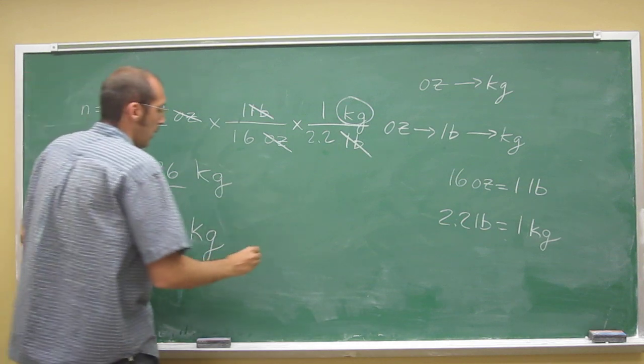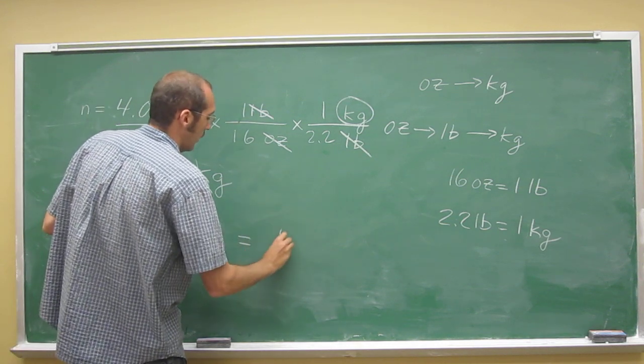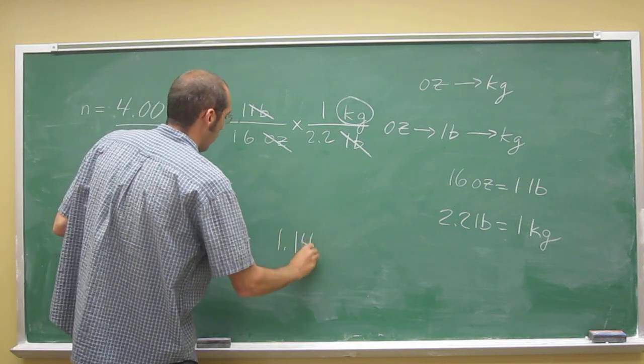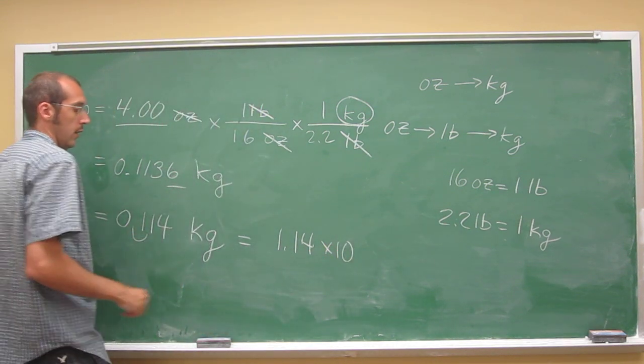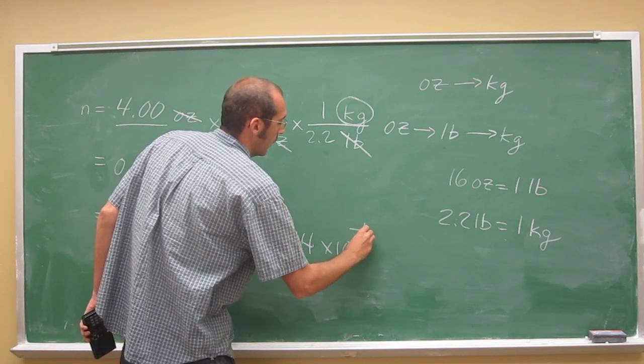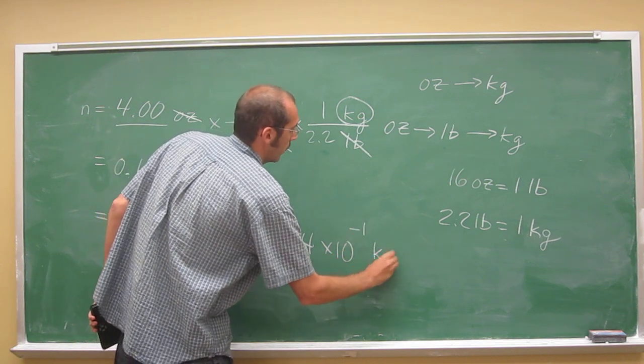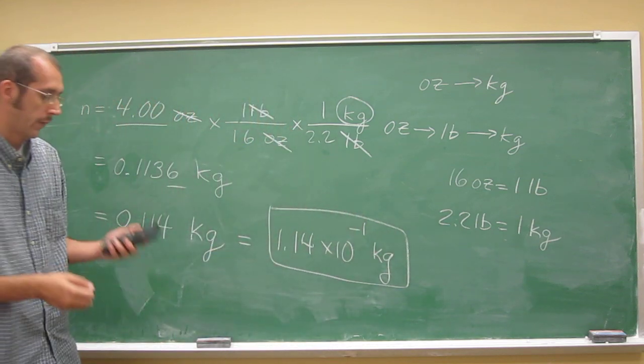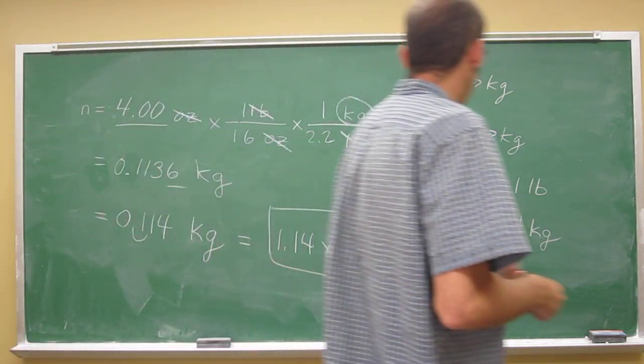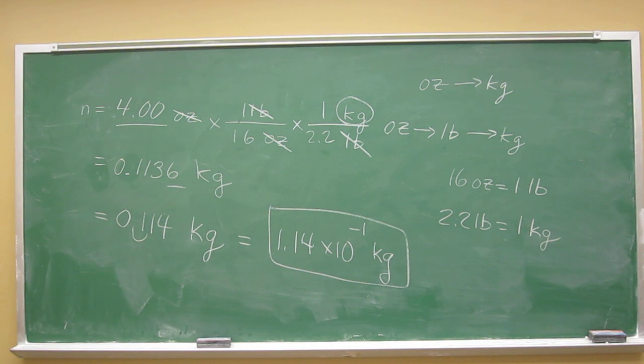And if we wanted to, we could take that and put it into scientific notation. 1.14 times 10 to the negative 1 kilograms. So that's how many kilograms are in 4 ounces. Less than 1.